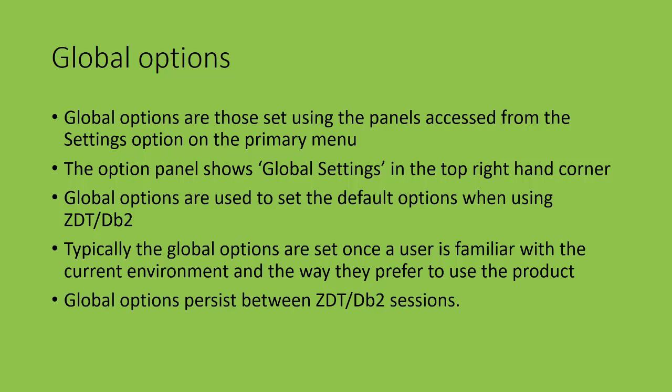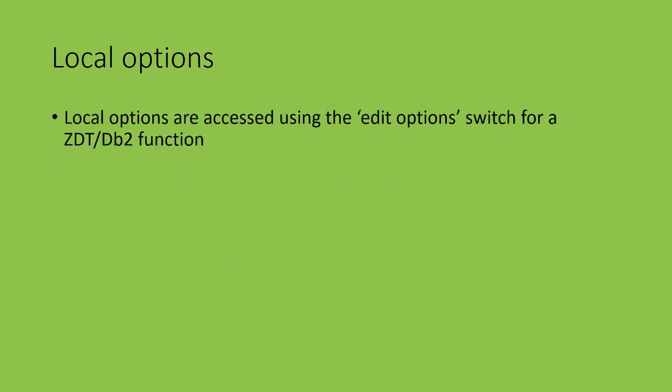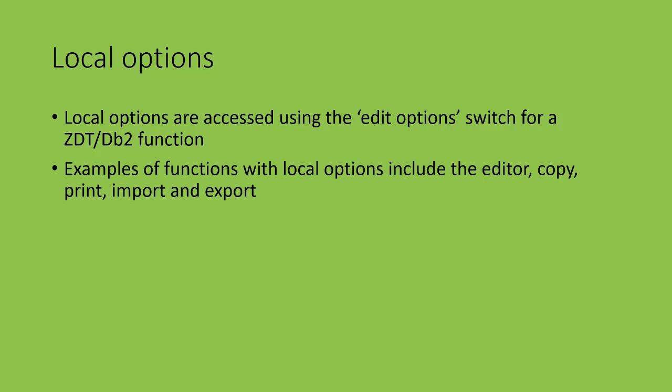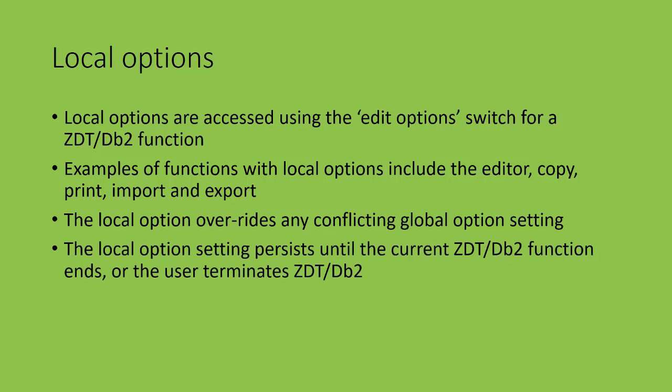Let's look at local options. Local options are accessed using the edit options switch for a ZDataTools function. The options panel that is displayed does not have global settings in the top right-hand corner. Examples of functions with local options are the editor, the copy, print, import, and export functions. When a local option is set, it overrides any conflicting global options setting. The local option setting persists until the current function ends or the user exits the ZDataTools DB2 Component.